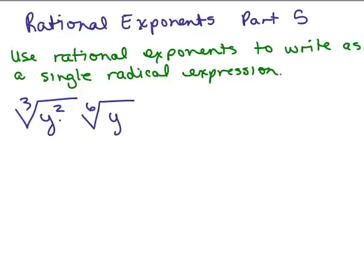The cube root of y squared times the sixth root of y. We have a cube root of something and a sixth root of something, and we're going to try to write that as just one radical. We're going to use rational exponents. So we begin by rewriting each of these radicals with rational exponents. The cube root of y squared would be y to the 2 thirds, and the sixth root of y would be y to the 1 sixth.